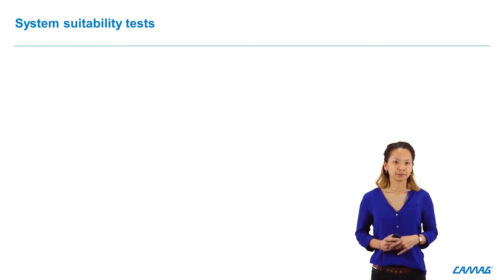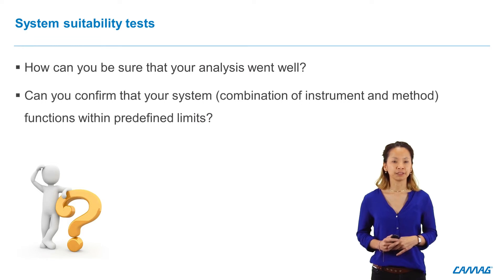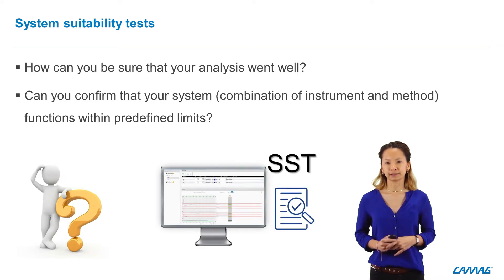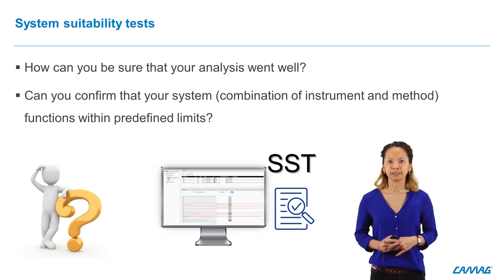As an analytical chemist, when your analysis is complete and before processing your data, how do you know that your test has gone well? Could you confirm that your system, instrument and method combination works within the predefined limits? That's why a system suitability test is commonly used by laboratories to ensure that the complete analytical system, including instrument, solvent and analyst, is suitable for the intended application.